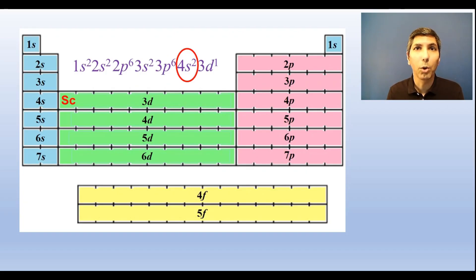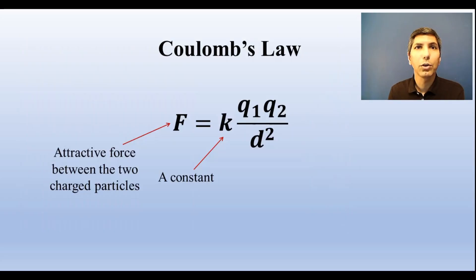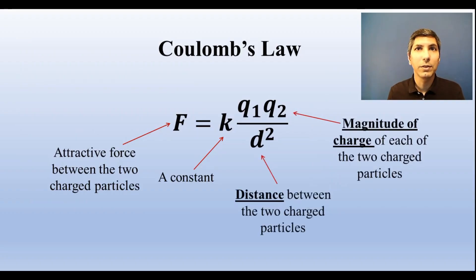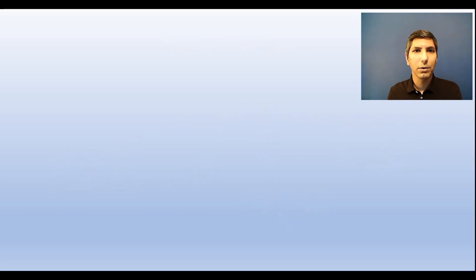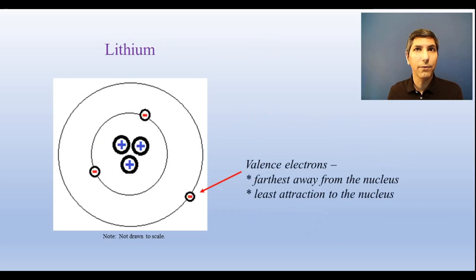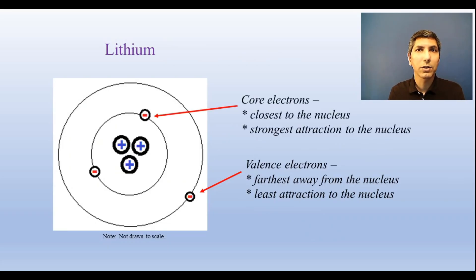If we're trying to compare the forces holding the electrons to the nucleus, we use Coulomb's law. Essentially, Coulomb's law states that there are two factors, charge and distance, when determining the force holding two charged particles together. The greater the charge, the stronger the attractive force. The lower the charge, the weaker the attractive force. The greater the distance, the weaker the attractive force. And the lower or closer the distance, the stronger the attractive force. So that means that electrons that are the farthest away from the nucleus, the valence electrons, have the weakest attractions to the nucleus. So they're the ones that can be removed the easiest. And these core electrons, the ones that are closest to the nucleus, are the most difficult to remove.